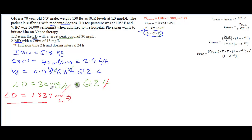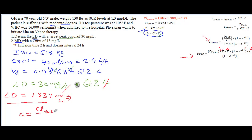Now that we have the loading dose, the next step is to find out the maintenance dose. We have to rewrite the CSS max equation to solve for the dose. We need the volume of distribution, which we already have, the elimination rate constant K, the infusion time of 2 hours, and the dosing interval T of 24 hours. So the first thing is we need to find K. The equation is: clearance equals K times volume of distribution.